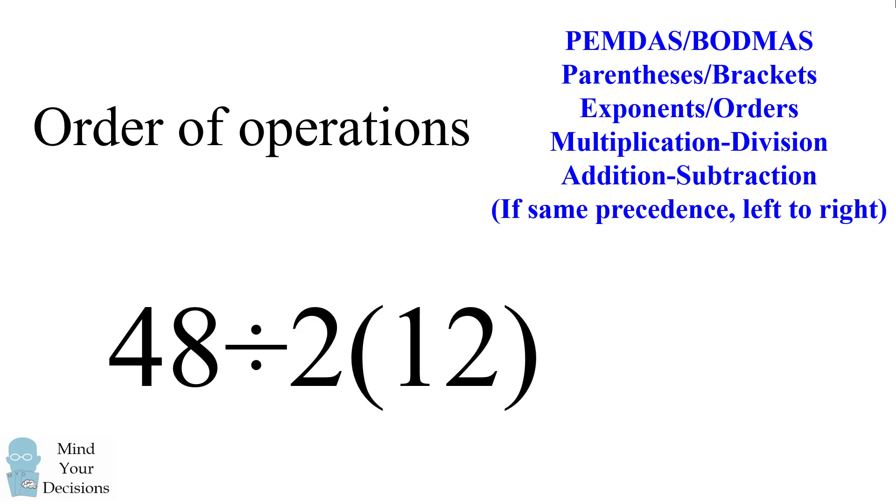Now there is a question of what to do next. If you input this expression into any scientific calculator, you will see that it will interpret this 2 parentheses 12 as an implicit multiplication. So we need to convert this parentheses into an implicit multiplication of 2 times 12.